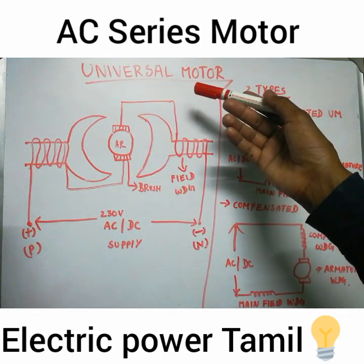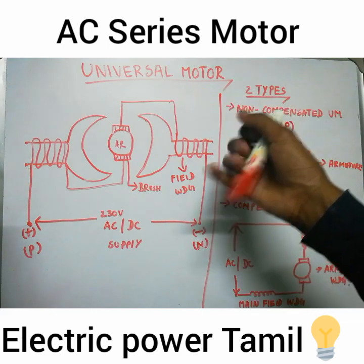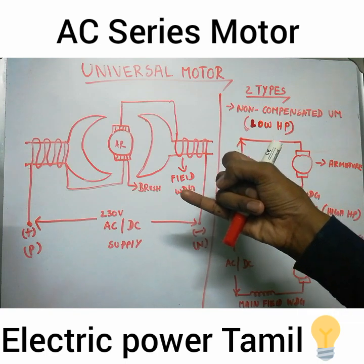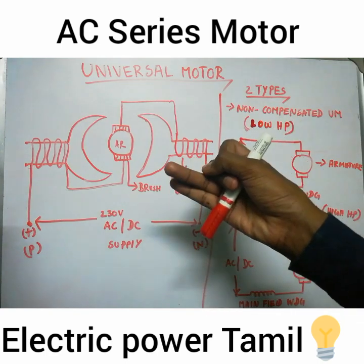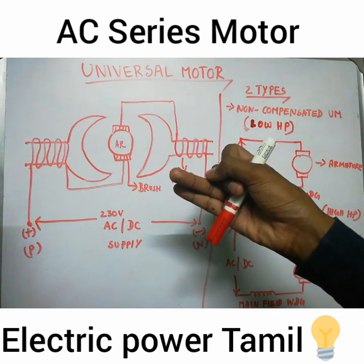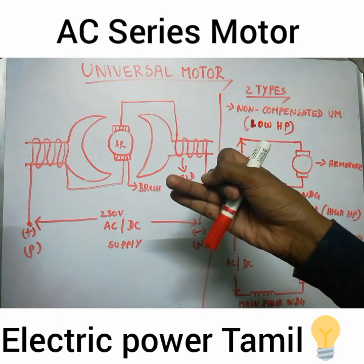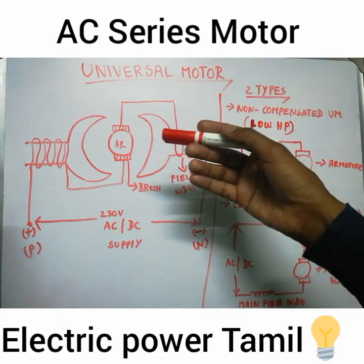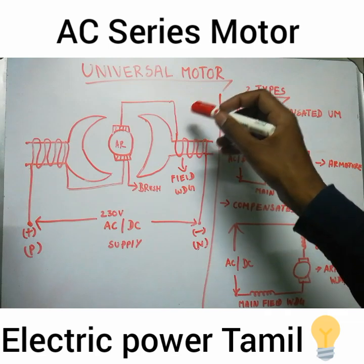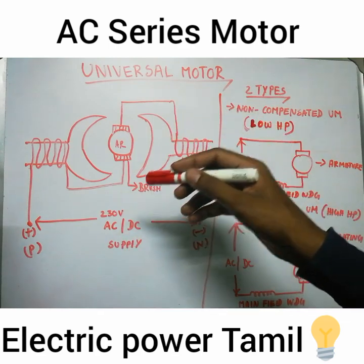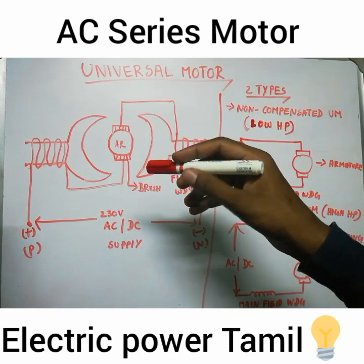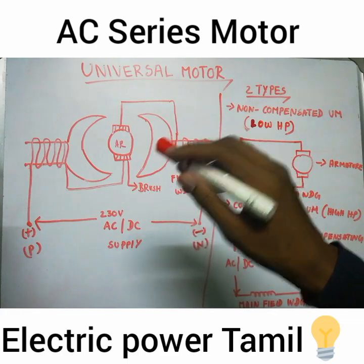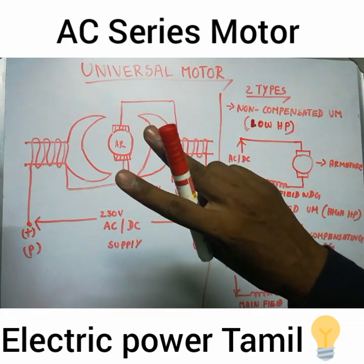This motor is used in wheat grinders and mixers. We also use it in portable drilling machines. The universal motor is used in vacuum cleaners and blenders. The main reason is that the starting torque is very high. The load is small capacity — both high HP and low HP varieties.